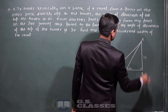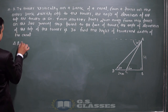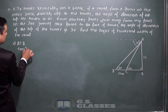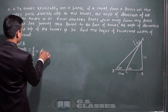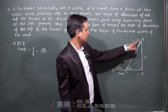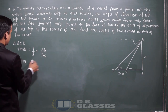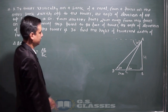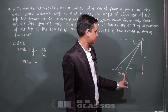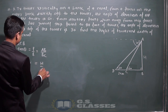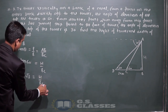I have taken the height of the tower as H. First, let's take triangle ACB. In triangle ACB, tan theta equals perpendicular upon base. Perpendicular is AB, base is BC. Theta is 60 degrees. tan 60° = √3, so H = √3 · BC. This gives us H in terms of BC.